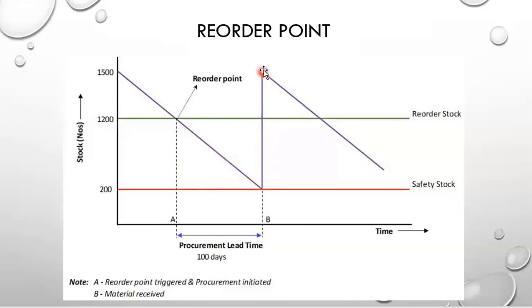This is important because later in the class, around week seven, you're going to be calculating the costs of inventory. One of the assumptions used in our inventory cost calculations is that all of the inventory is received all at once. Obviously if it doesn't arrive all at once, you have to change your calculations accordingly. So now inventory goes down again and we reorder — this is how reorder works in theory.